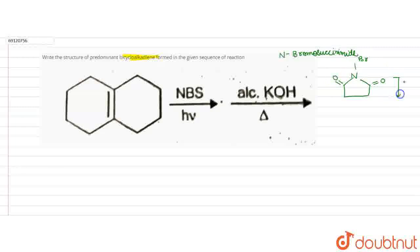In the presence of sunlight, this undergoes free radical bromination. This is a free radical mechanism. When the free radical forms, this bond will break.